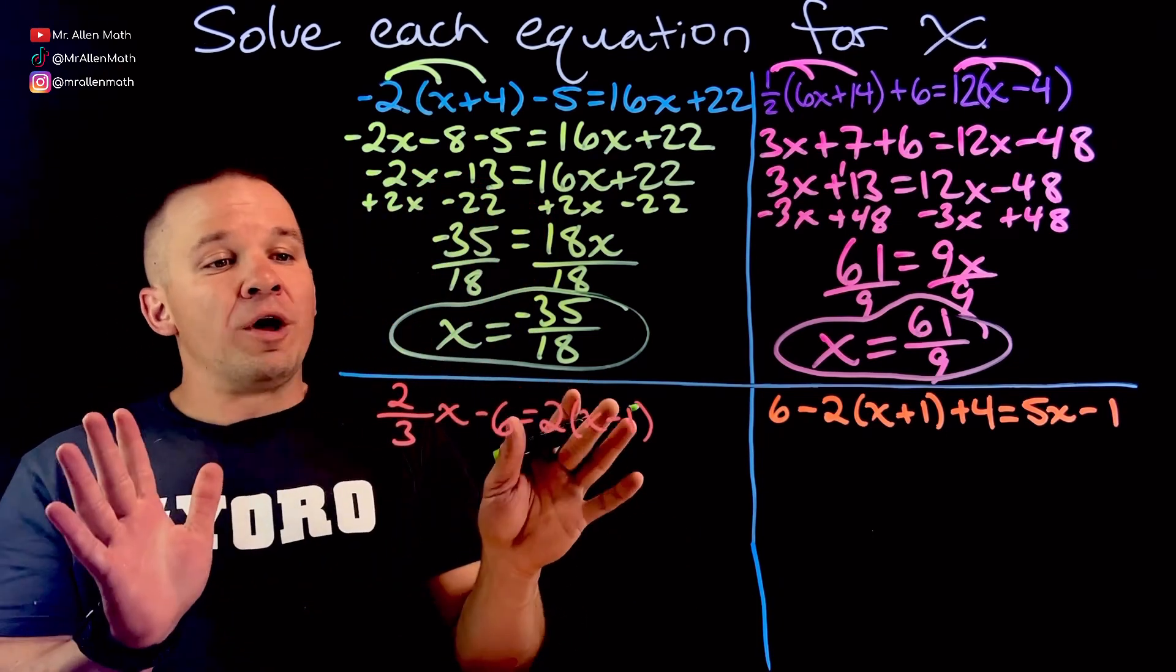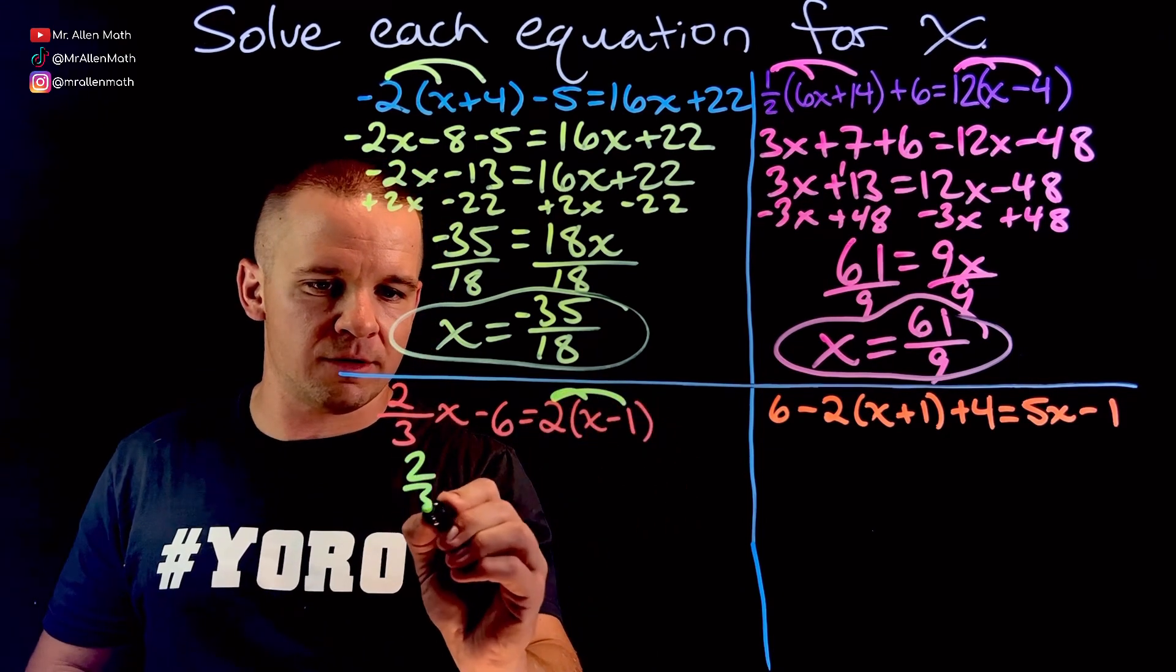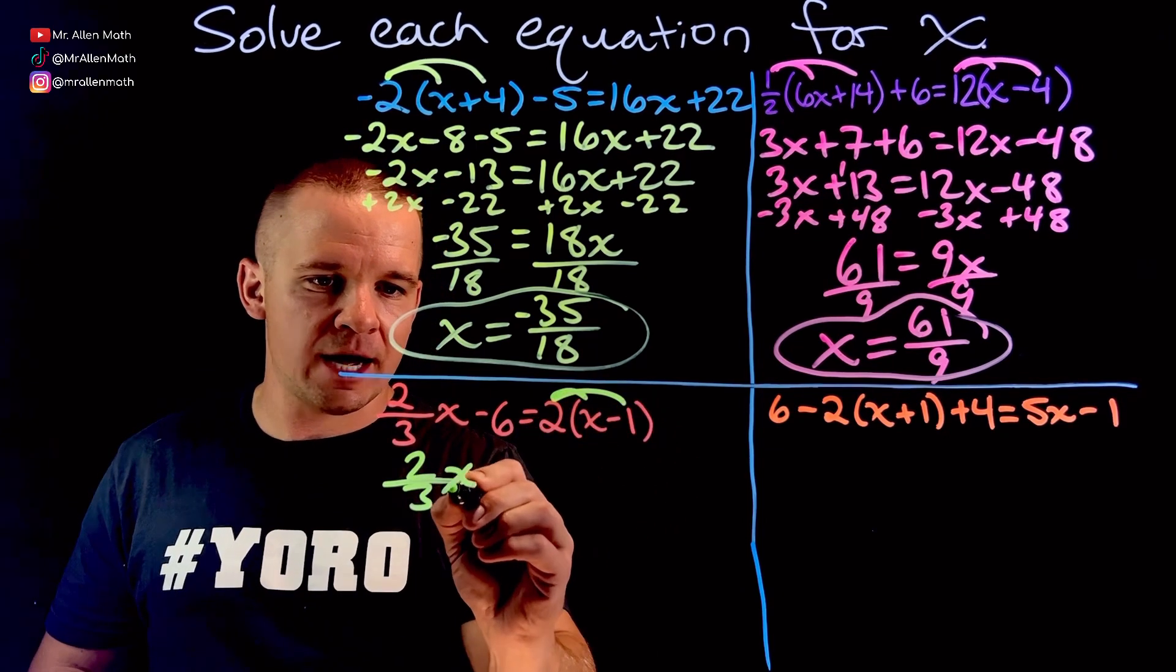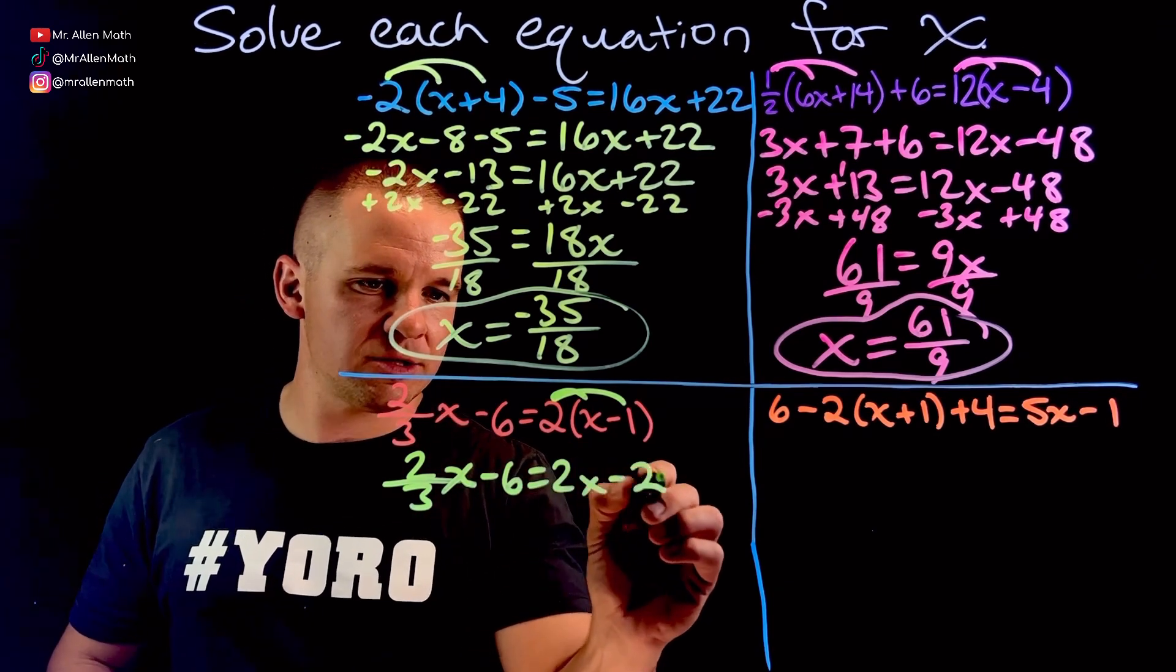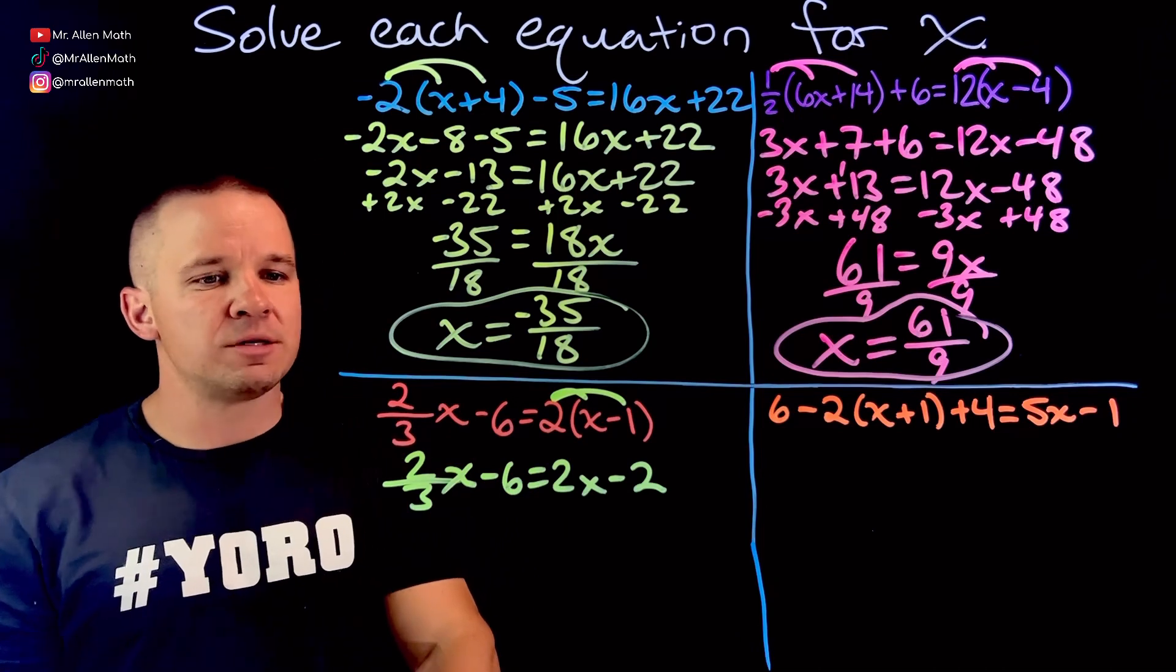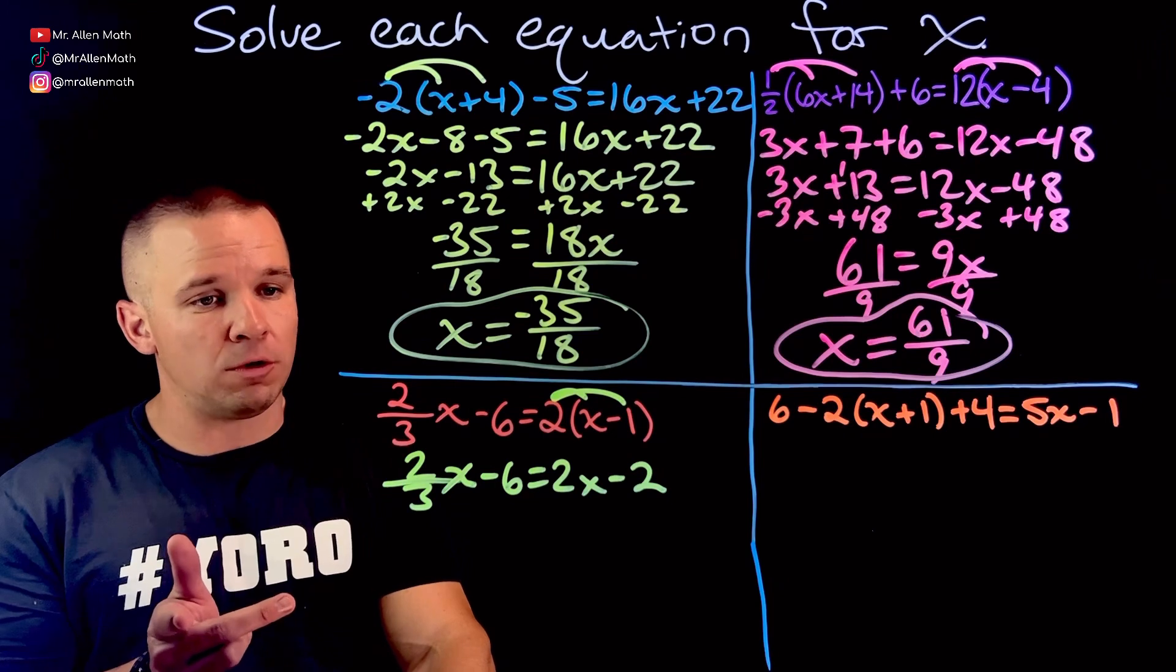Only one thing to distribute here. How wonderful. So I'm going to distribute this and I've got two thirds x minus six equals 2x minus two. So here's where some decisions have to be made. I can get common denominators for everything. That's cool.